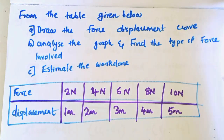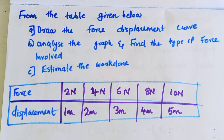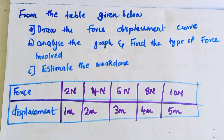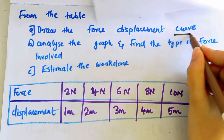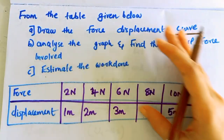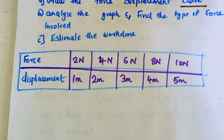The first question is: from the table given below, draw the force-displacement curve, analyze the graph, and find the type of force involved. We have found the data - force, displacement, and values. We have found the force-displacement curve with x-axis and y-axis. We have found a diagram - a graph.